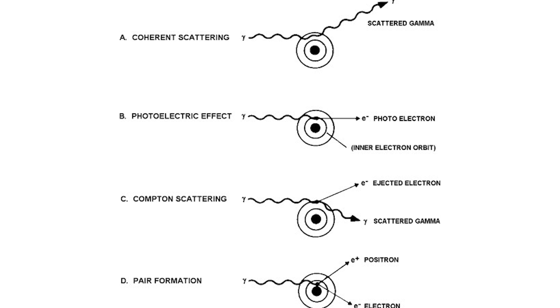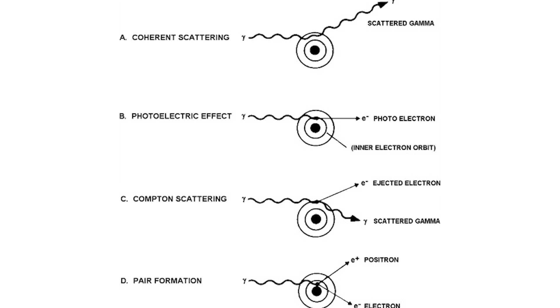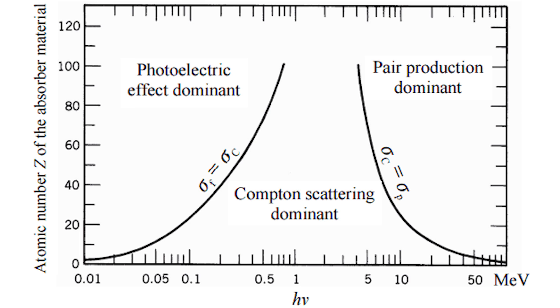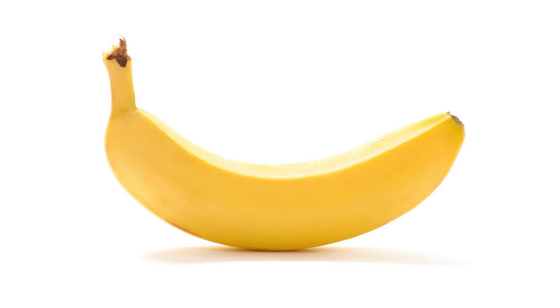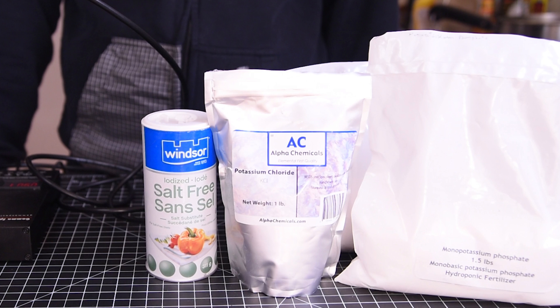There are basically four ways that a gamma ray can interact with matter, and the probability of each method changes based on the energy of the gamma ray. Past about 1,000 kiloelectron volts, or 1 mega electron volt, while it is possible to get pair production, the probability still isn't very high. But as you approach 10 mega electron volts, the probability climbs significantly. So for your average banana, for example, which contains approximately 350 milligrams of potassium, you get one positron every 75 minutes. As you can imagine, that would make detecting this very difficult.